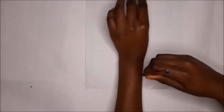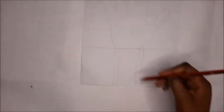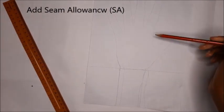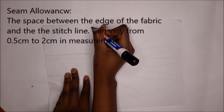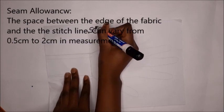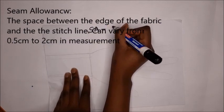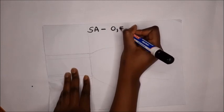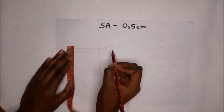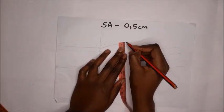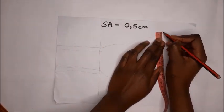Now we're going to add seam allowance. Seam allowance is the space between the edge of the fabric and where you're going to be stitching. I'm giving myself 0.5 because I'm using a very stretchy fabric, lycra, my favorite. It's a four-way stretch fabric, so you don't really need much seam allowance because it stretches.